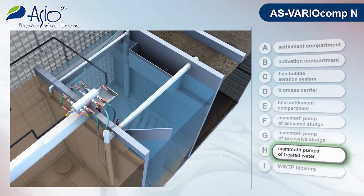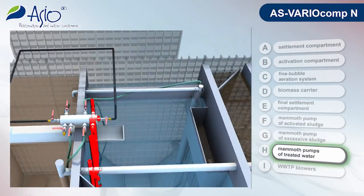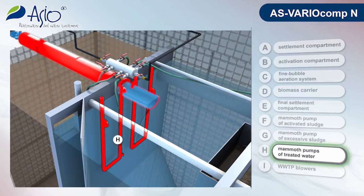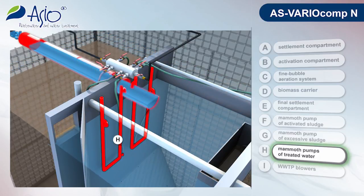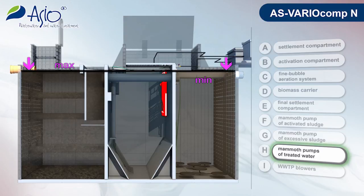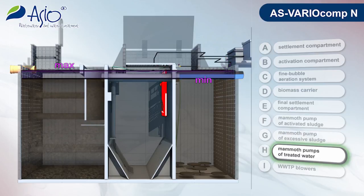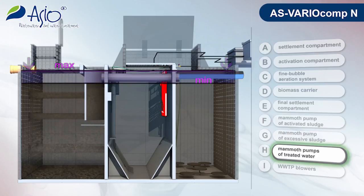A pair of mammoth pumps is used to pump treated water to the outlet trough. This provides accumulation space for the homogenisation and equalisation of incoming wastewater.